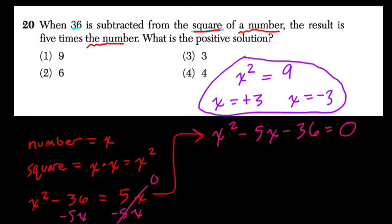So now, what do I do? Well, the basic strategy and hope is that I don't have to use the quadratic formula. I'm going to look for factors of negative 36 that add up to negative 5.